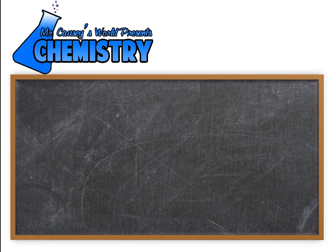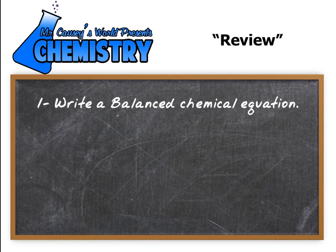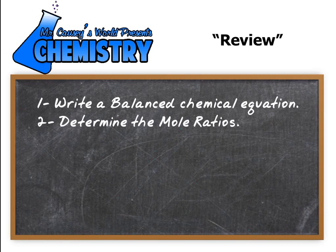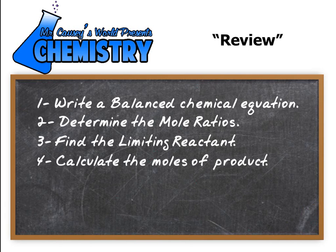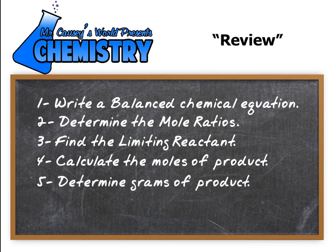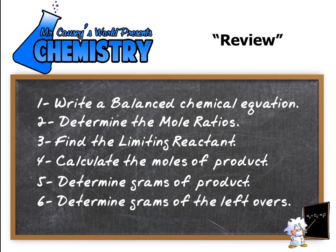Let's review. We wrote a balanced chemical equation, then determined the mole ratios from the balanced equation. We then found the limiting reactant, calculated the moles of product using the limiting reactant — which in this case was pretty straightforward — determined the grams of product, and then determined the grams of the leftovers.